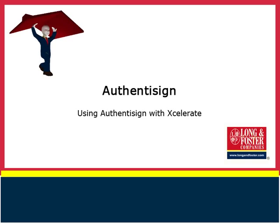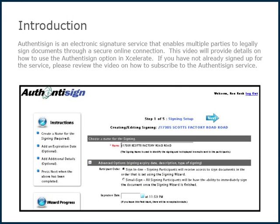Welcome to this video on using the AuthenticSign program with Xcelerate. AuthenticSign is an electronic signature service that enables multiple parties to legally sign documents through a secure online connection. This video will provide details on how to use the AuthenticSign option in Xcelerate. If you have not already signed up for the service, please review the video on how to subscribe to the AuthenticSign service.